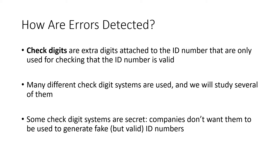The most common way to do this is using what's called check digits. These are extra digits that are attached to the ID number and are only used for checking that the ID number is valid. There are lots of different check digit systems, and we're going to study several of them. Some of them are secret — there are systems that companies don't want you to know about because if you did, you could use them to create fake ID numbers. Some of these are proprietary, but the ones we're going to talk about are public knowledge.